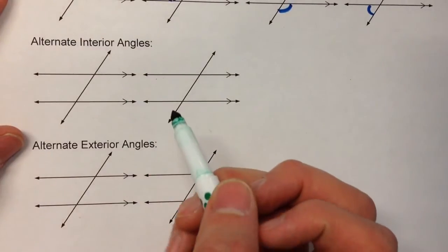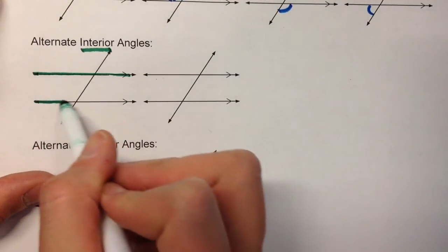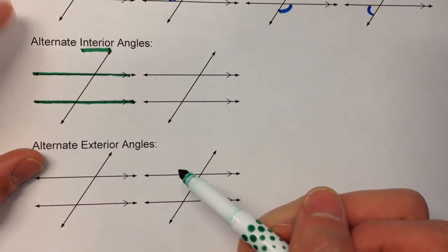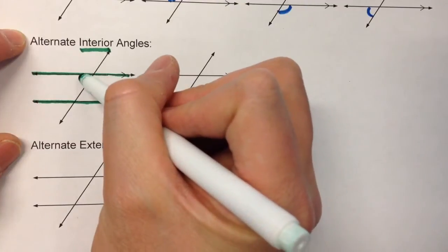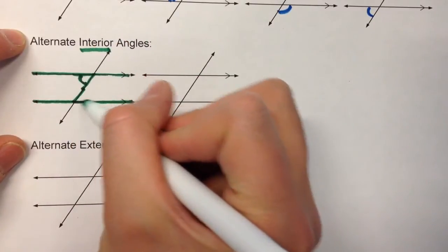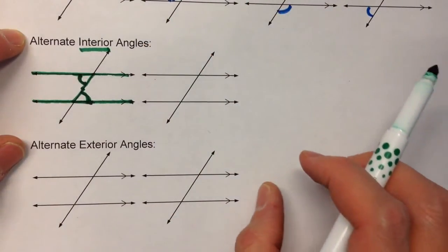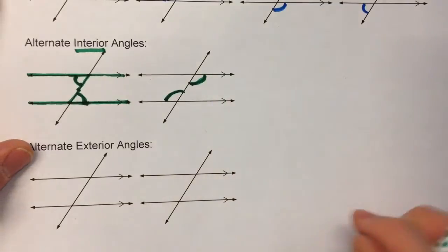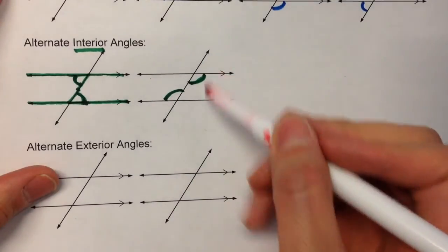Alternate interior angles are angles that are inside — hence the name interior — inside of the parallel lines. There are two angles up here and two angles down there that are inside the lines. Alternate interior angles are on alternating sides of your transversal. So for example, if this one's on the left side of the transversal, its alternate interior angle will be on the right side down here. So these two angles are alternate interior angles and are equal in measure. Similarly, this angle right here and this angle are alternate interior angles because they are on opposite sides of the transversal and are between the lines.